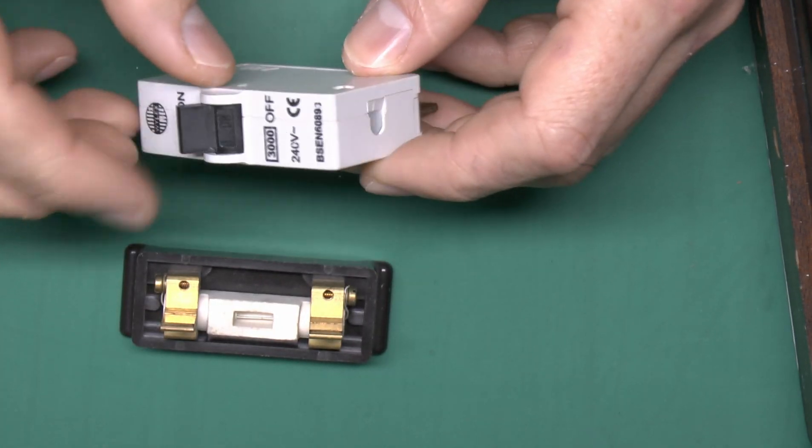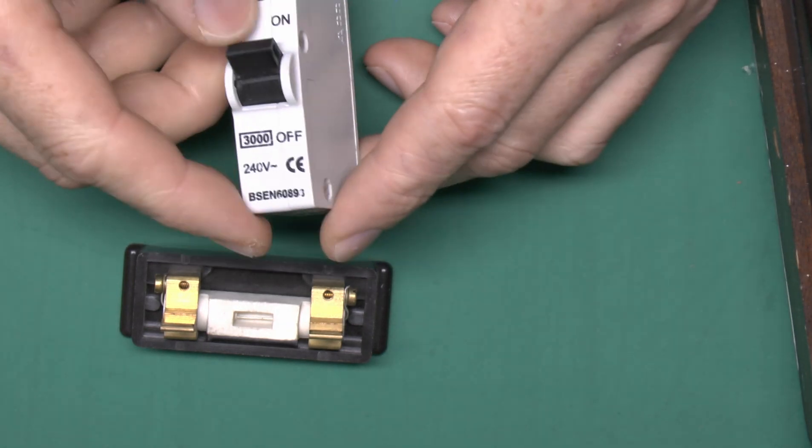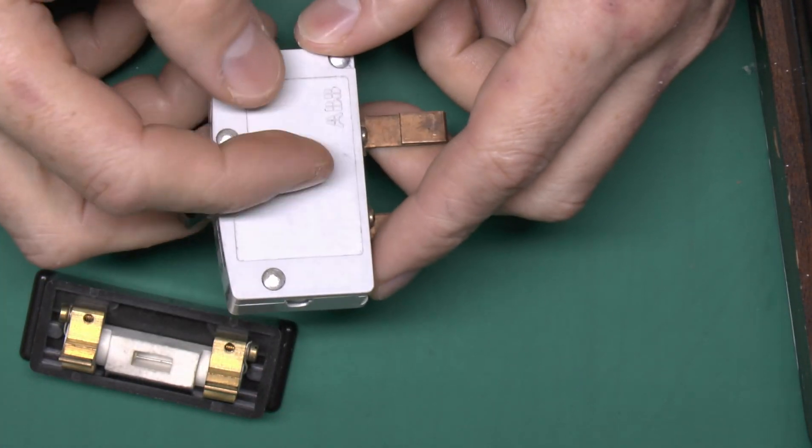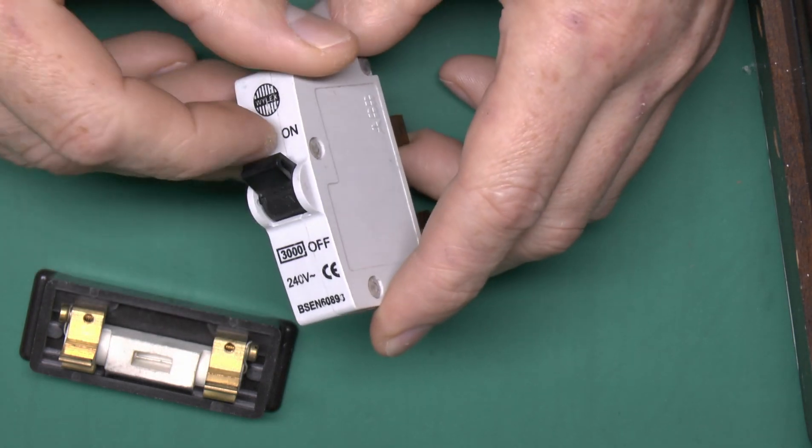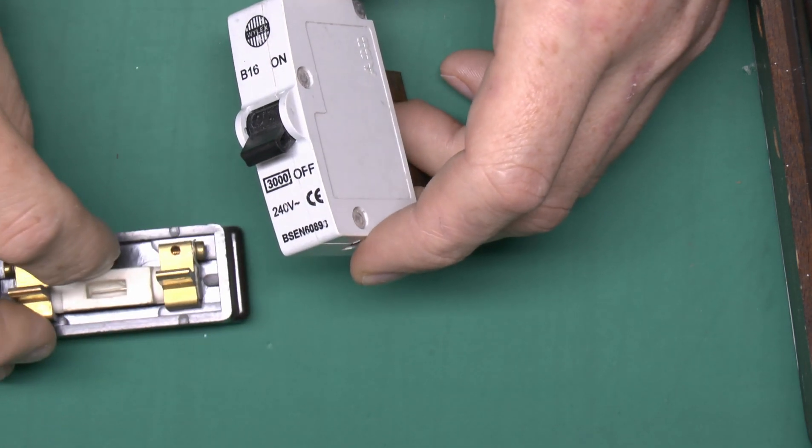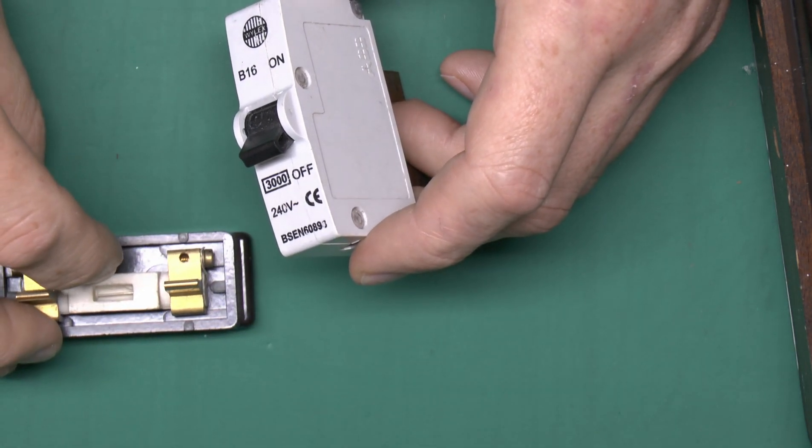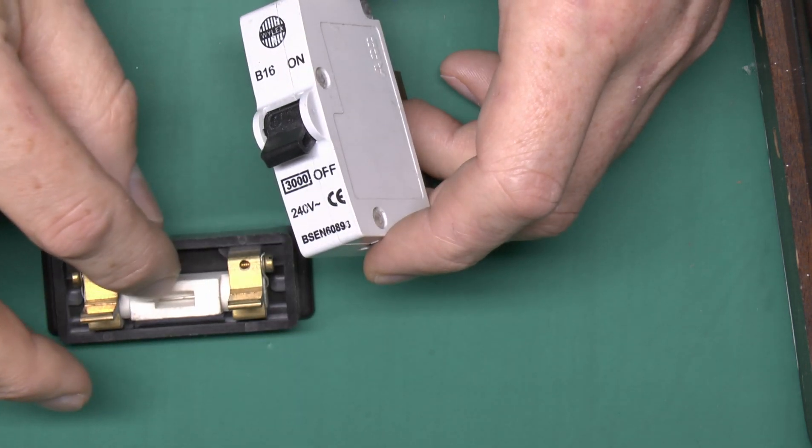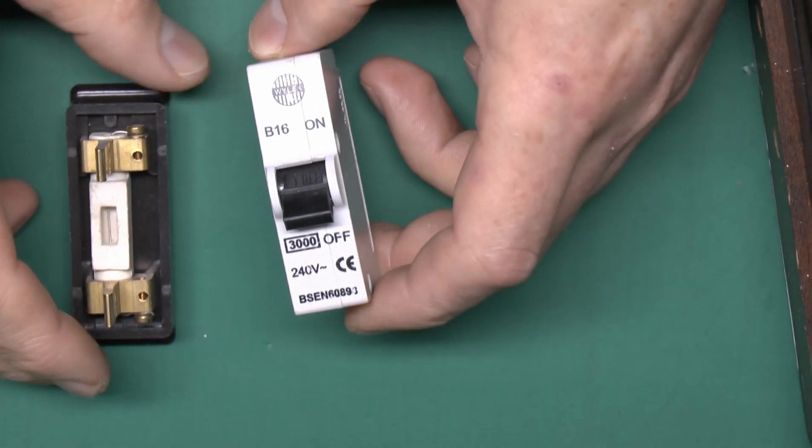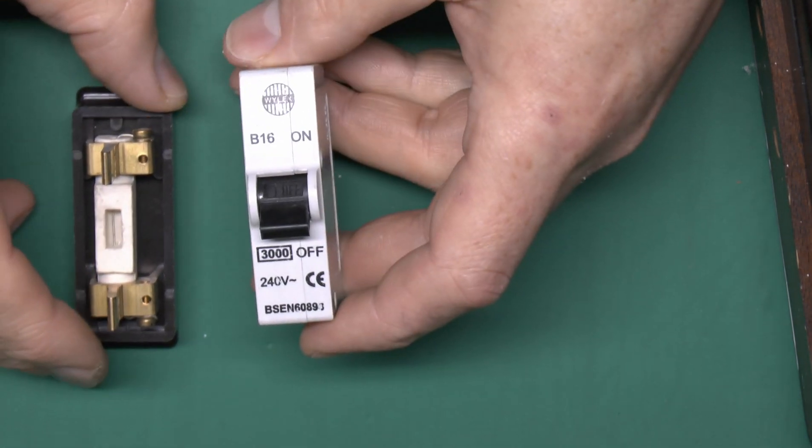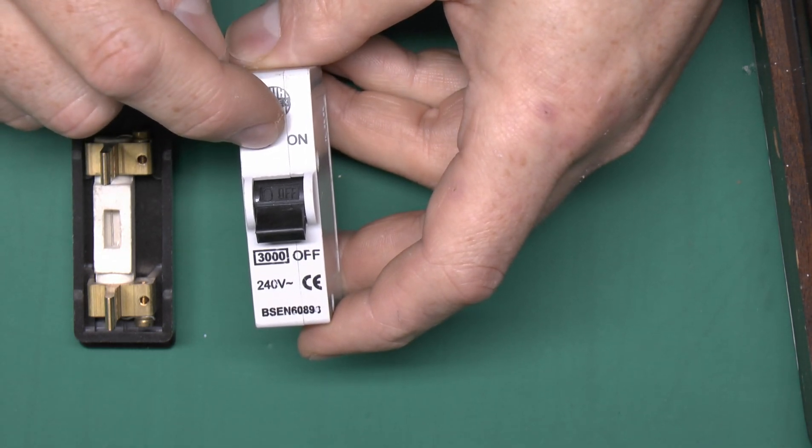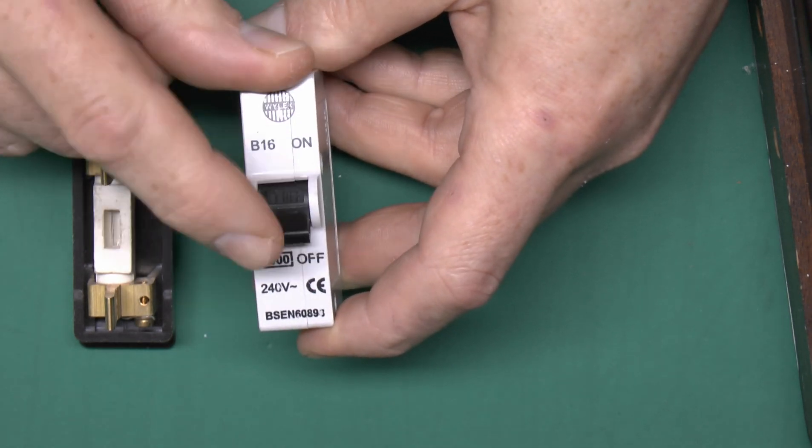These have two parts inside, there's a bimetallic strip and essentially as current passes through this heats up slightly and when it heats up to a certain degree it will cause the thing to trip off. Of course that's exactly the same as the fuse here which is just a piece of wire that heats up and obviously if the current is too large it heats up enough and it will melt through. So in that regard they're exactly the same and for short circuits where you're going to get a very substantial current flowing this has a magnetic coil inside and if the magnetic field reaches a certain level again that will cause the lever to trip off.